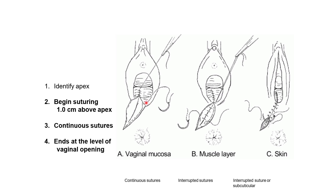Identify the apex, start suturing one centimeter above it, place continuous sutures ending at the level of the vaginal opening for the vaginal mucosa layer, then stitch the muscle layer, and finally put stitches for the skin. These three layers must all be sutured.